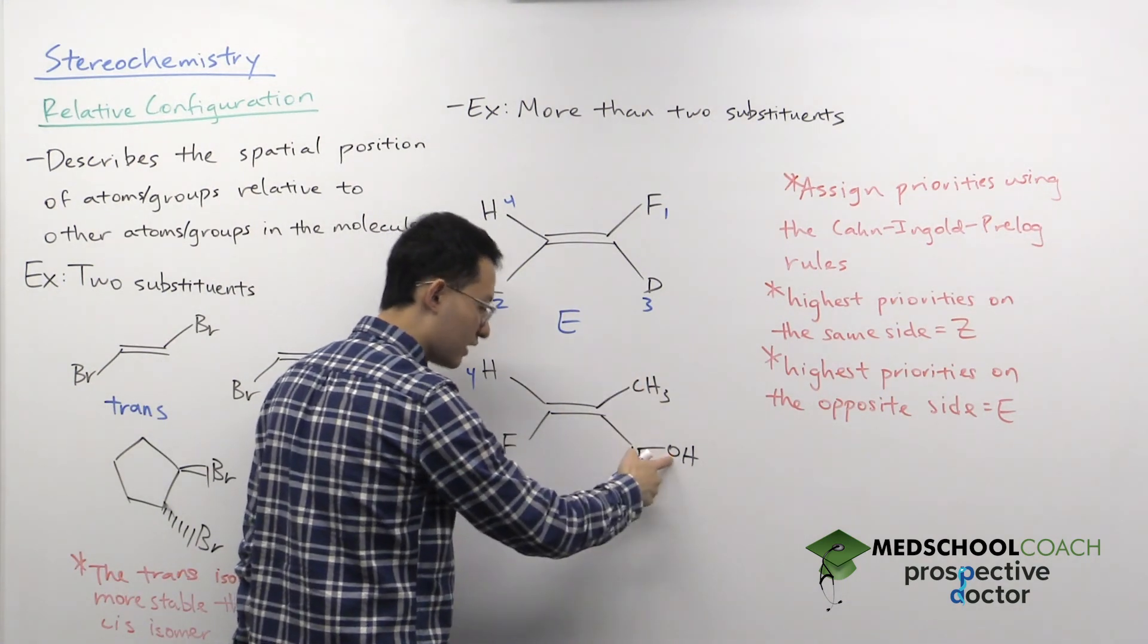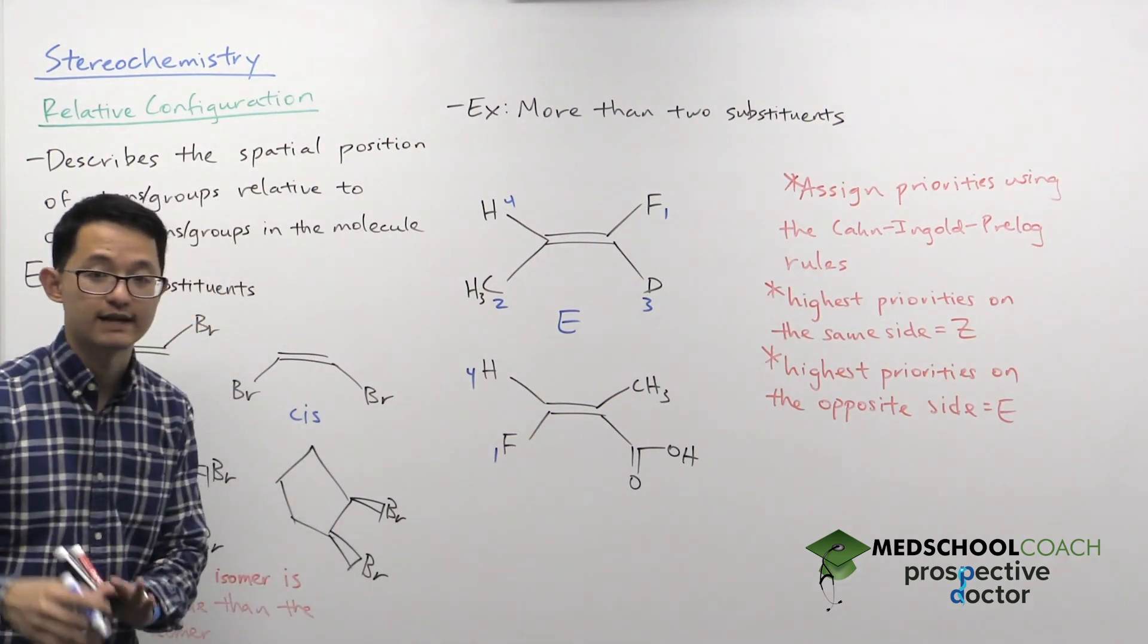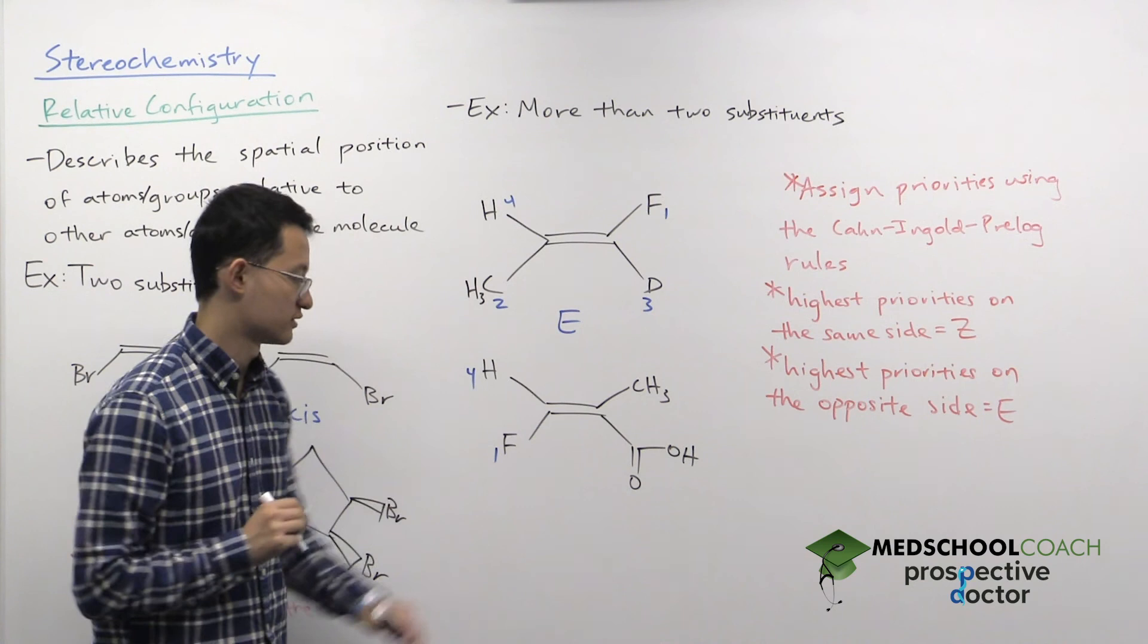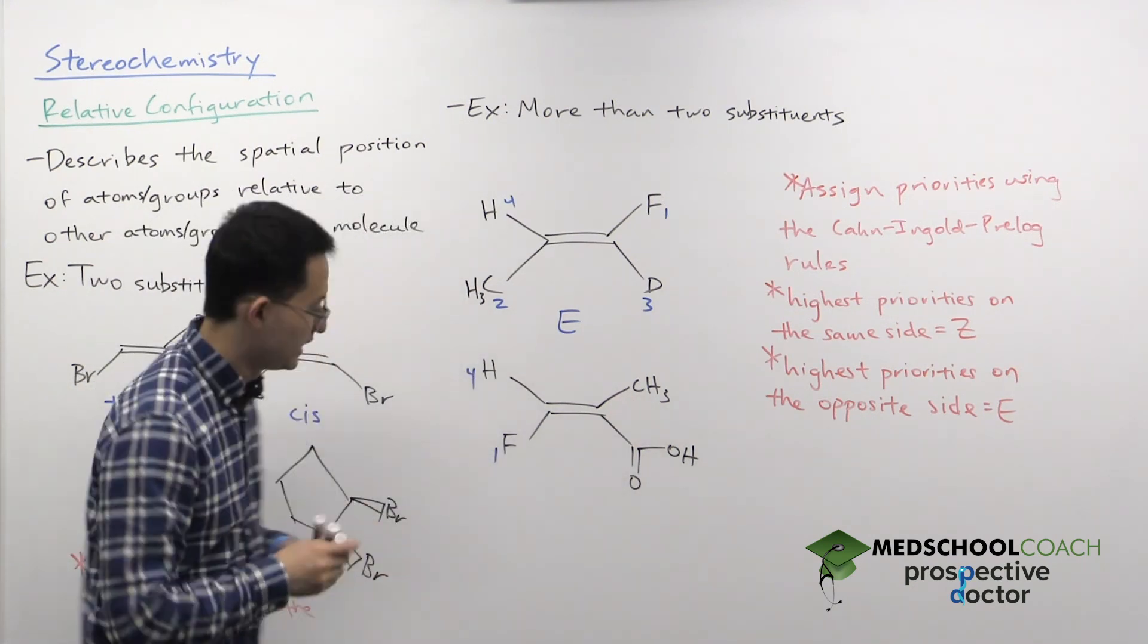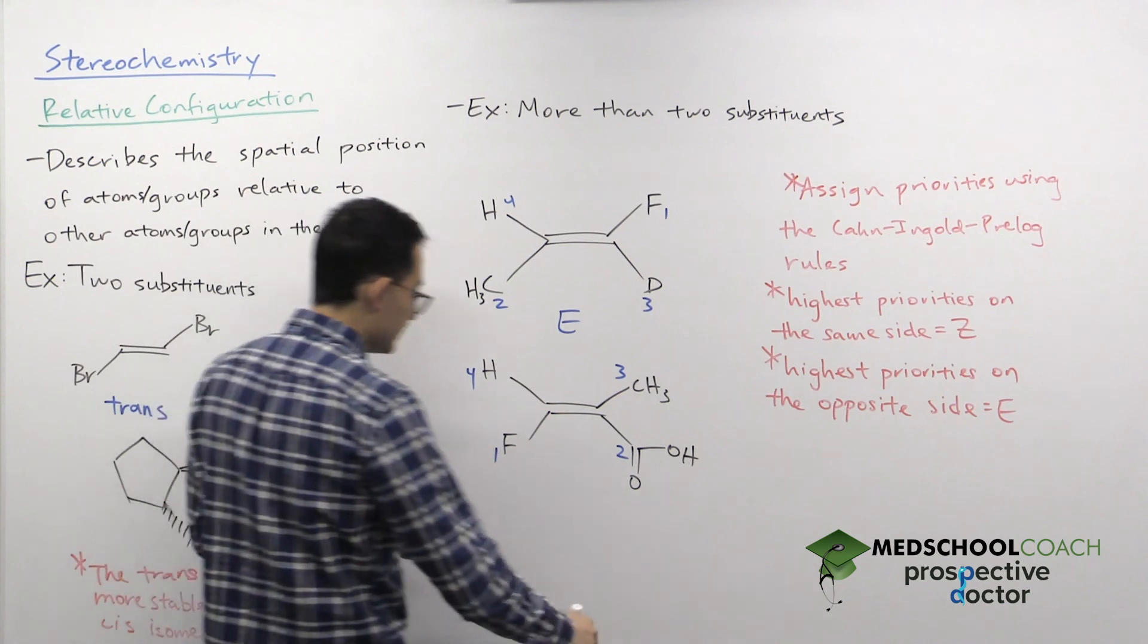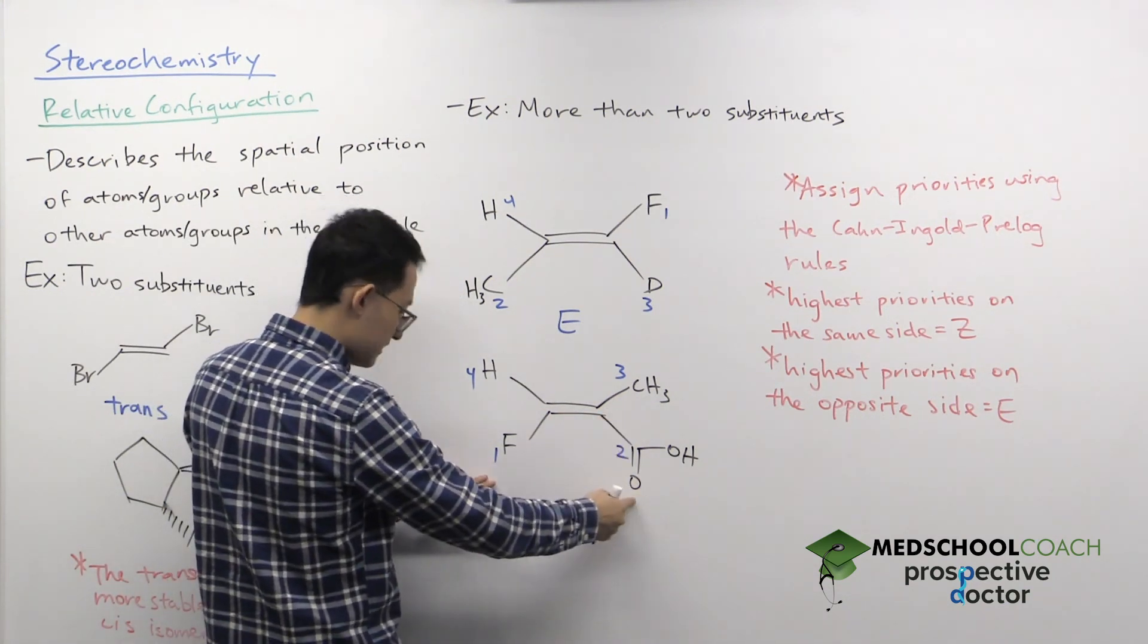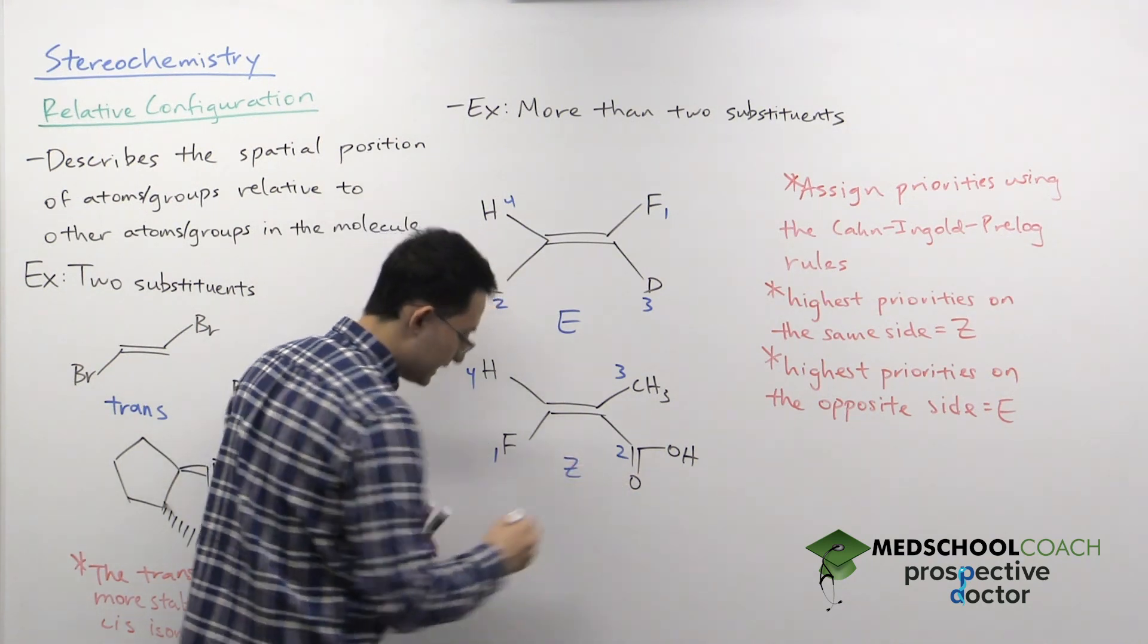This carbon is bound to an oxygen and double bonded to an oxygen. That double bond counts as two oxygens, so this is technically bound to three oxygens. Oxygen, of course, has greater atomic number than hydrogen, so that means this is going to be priority number two. This is priority number three. And now we can see the highest priority substituents on each side are on the same side, both facing down, so this is going to be Z.